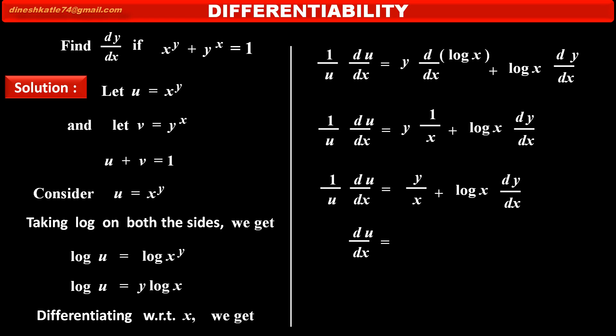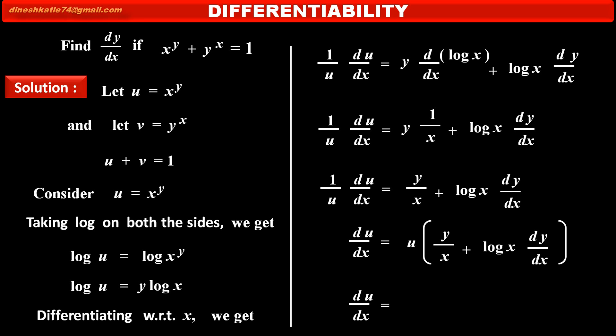Multiplying both sides by u, we get du by dx equal to u into the bracket y upon x plus log x into dy by dx. Substituting the value of u, we get du by dx equal to x raised to y into the bracket y upon x plus log x into dy by dx. This is the derivative of u.